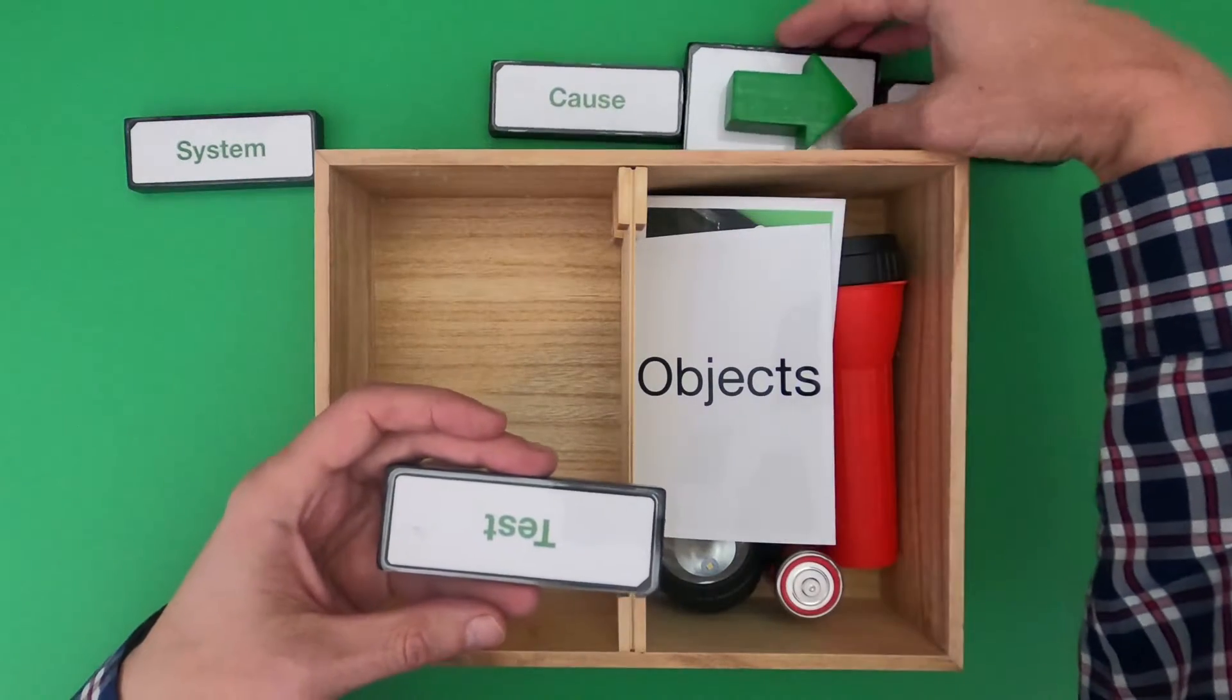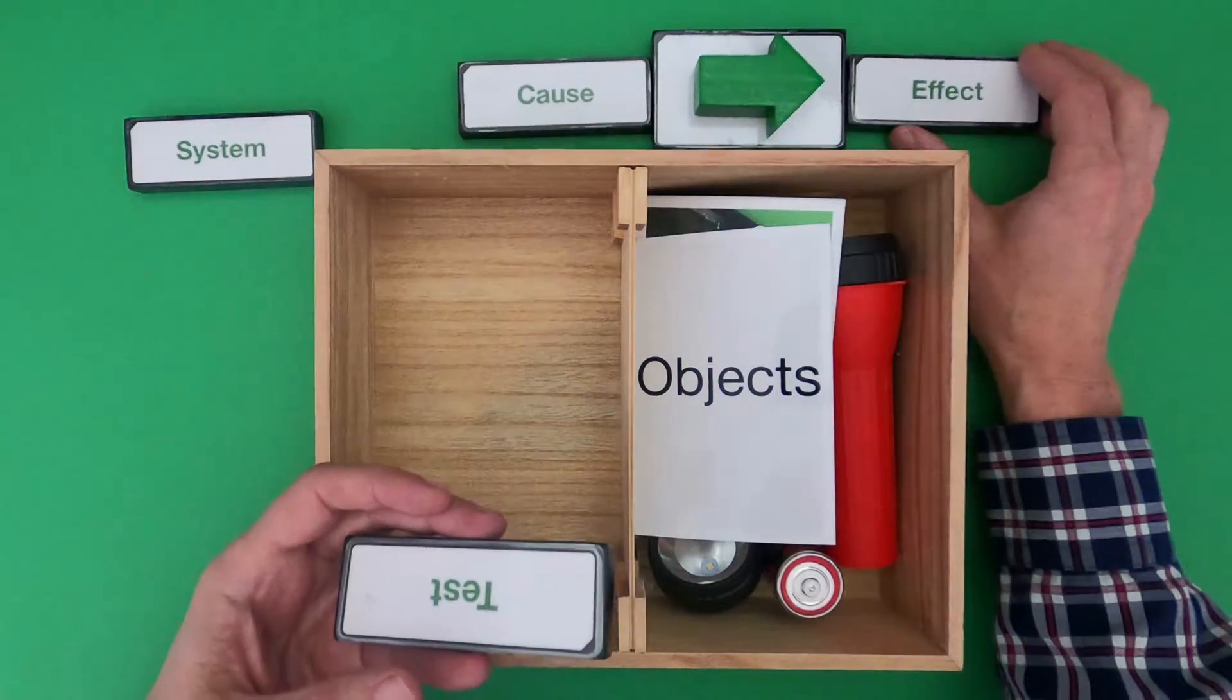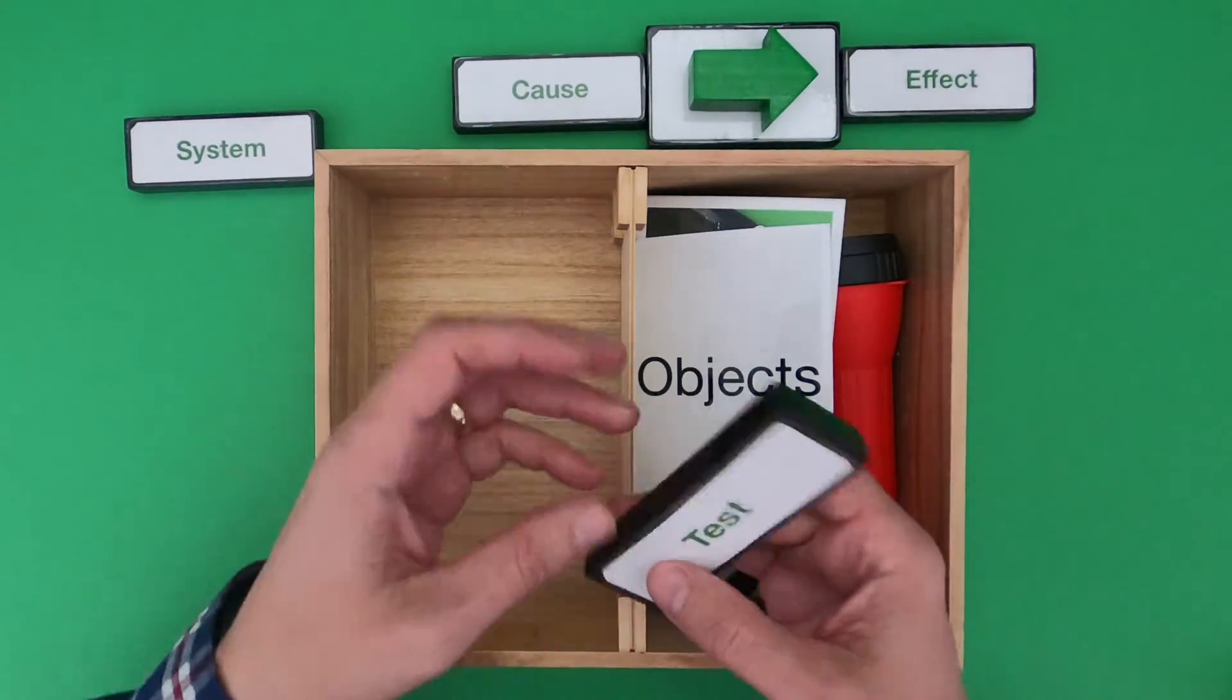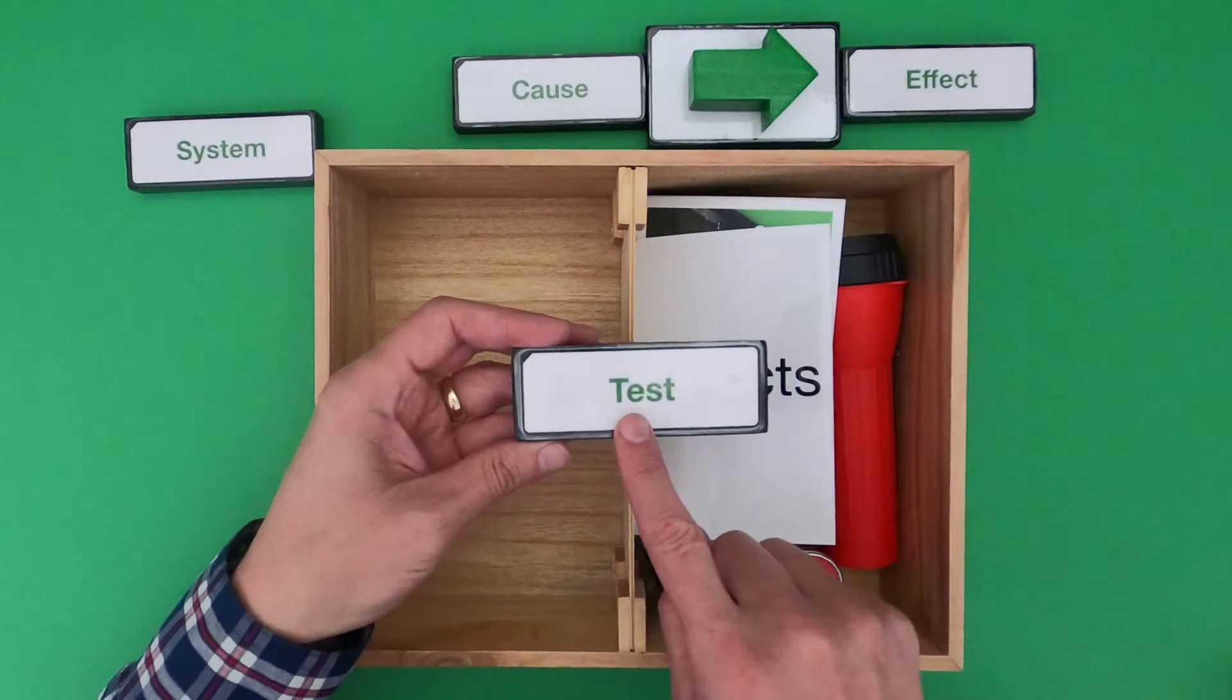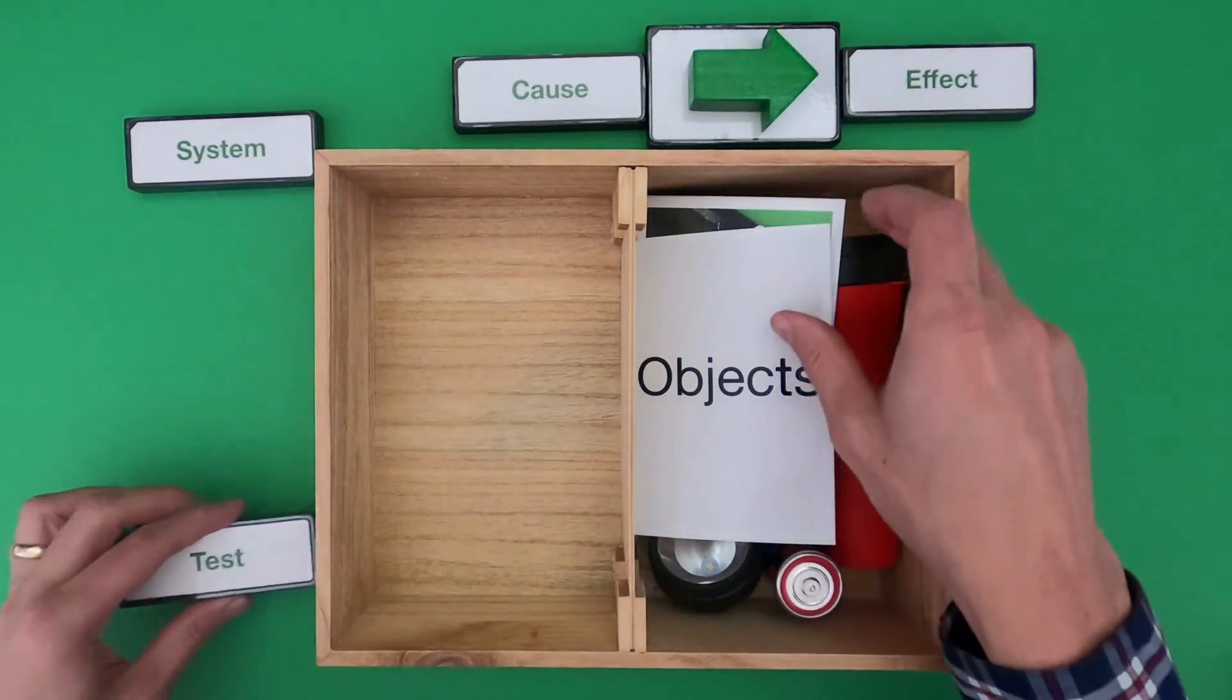What makes this video a little bit different is sometimes we could have a couple of causes or multiple causes that might be causing the effect. And so how in science do we develop a test or a fair test to figure out which of these causes is actually responsible for the effect?